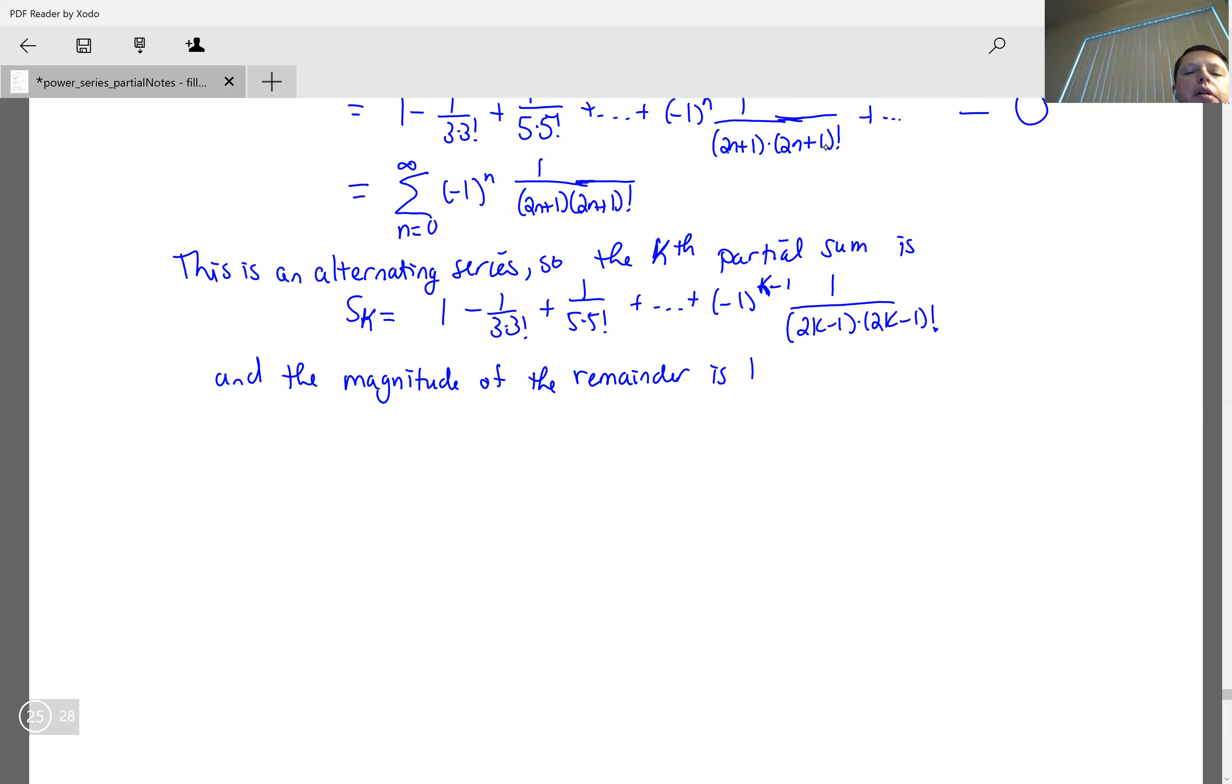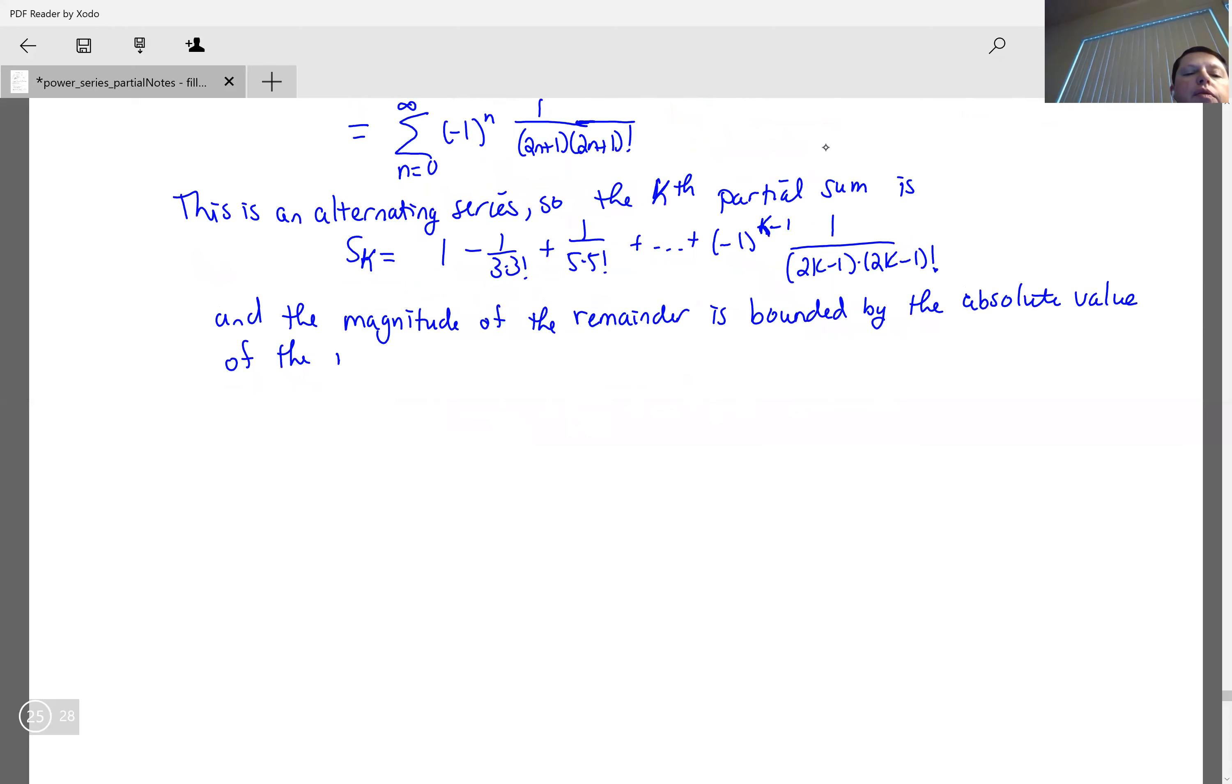And the magnitude of the remainder is bounded by the absolute value of the first neglected term. So what I mean is that my remainder is less than or equal to the absolute value of negative 1 to the k, 1 over 2k plus 1, 2k plus 1 factorial. So that's just 1 over 2k plus 1 times 2k plus 1 factorial.